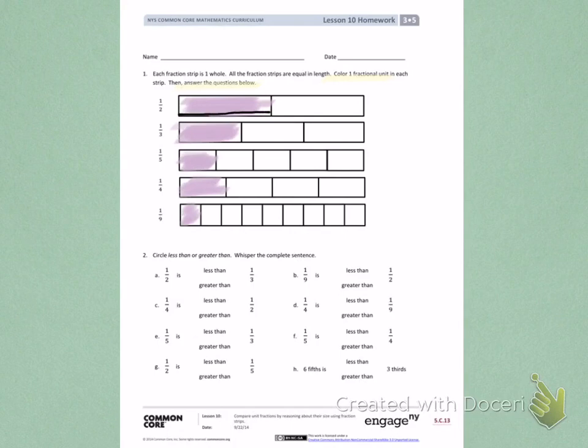Here is 1 third. Here is 1 half. Here is 1 third. When I look at those two pictures, I see I get more when I have 1 half than when I have 1 third. So I would say 1 half is greater than 1 third.